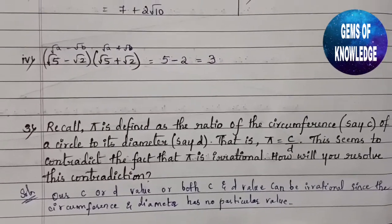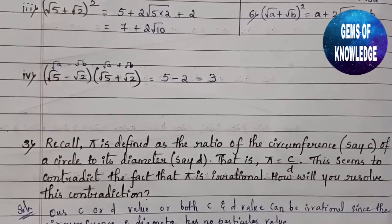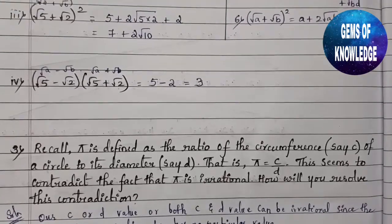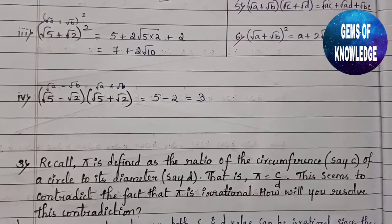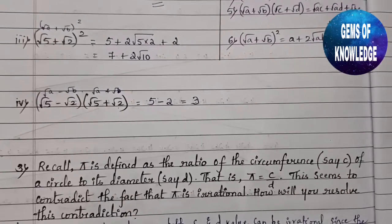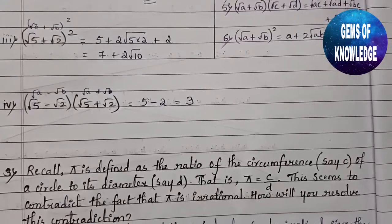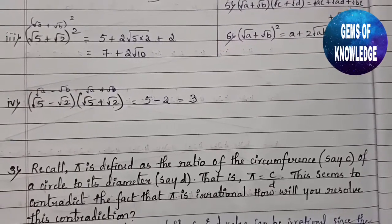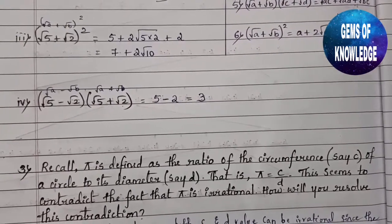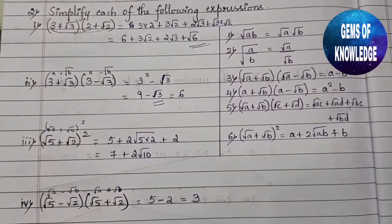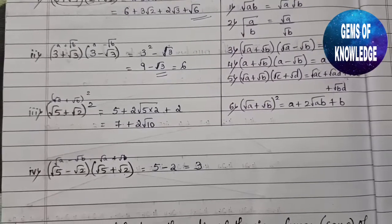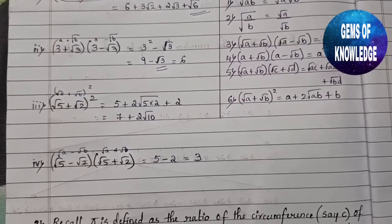Questions 4 and 5 — representing root(9/3) on a number line and rationalizing the denominator — are already uploaded on my channel; links are in the description box. Exercise 1.6, covering laws of exponents, is also uploaded there. I hope you understood the complete chapter. Don't forget to like, share, and subscribe. I'll be back soon with another video — stay tuned and stay connected, thank you.